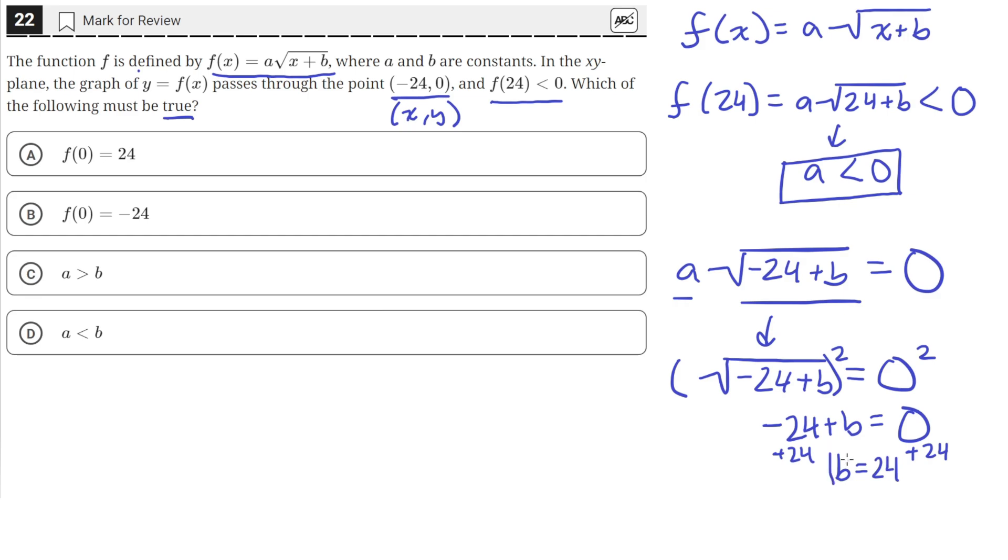We conclude that b = 24. This means b must be greater than a, since a is a negative number (less than 0) and b is a positive number. So b > 0, which is the same as saying a < b. Therefore, answer choice D is correct.